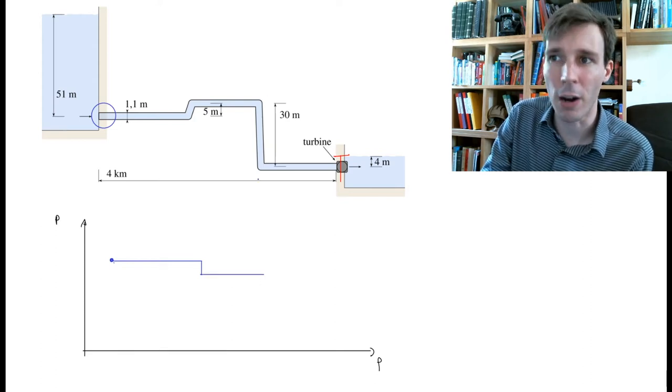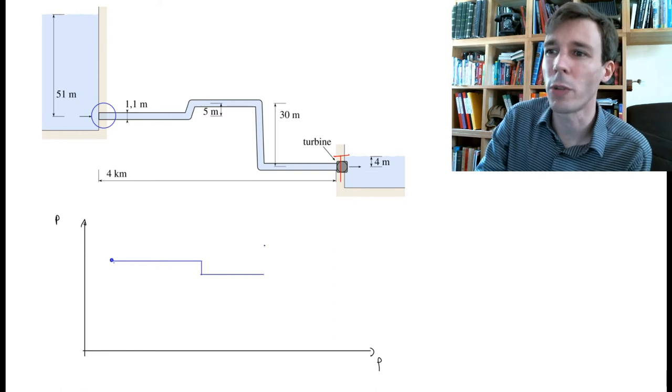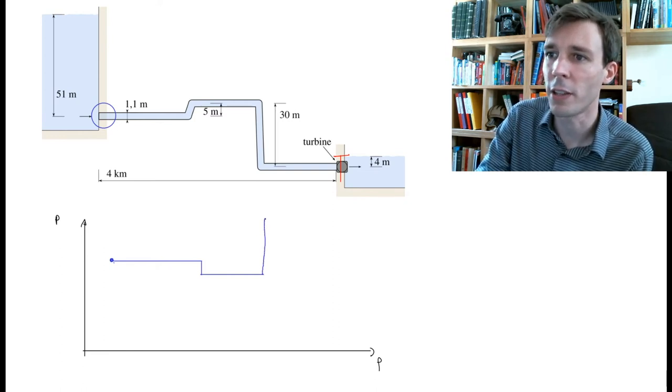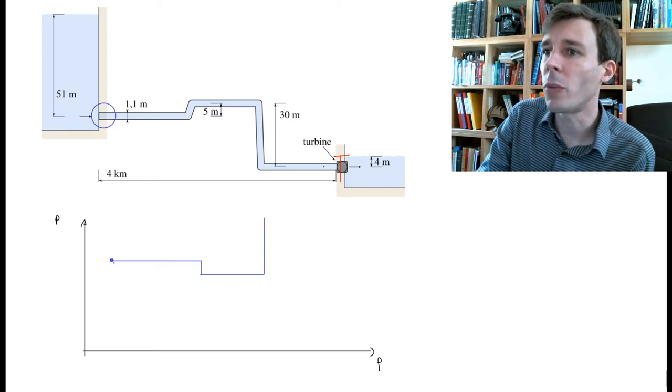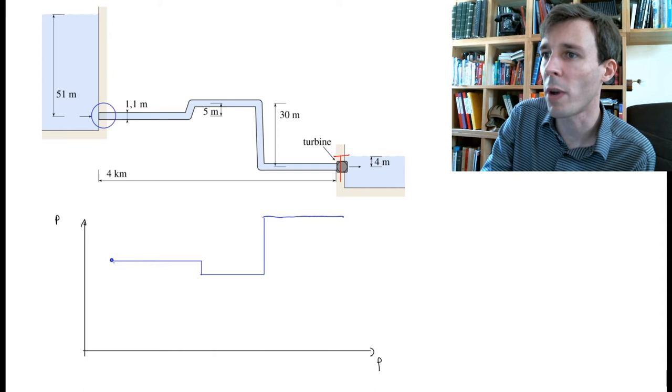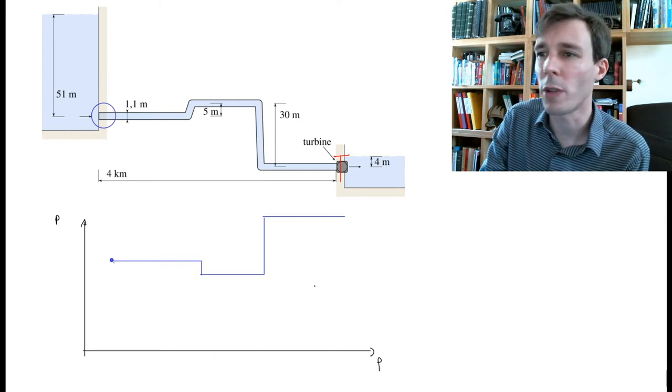Then now we go down so the pressure will increase. It will increase by approximately three bars, so the pressure will jump again here like so. And then again we are straight, we have a straight horizontal pipe, and so we have a straight line.